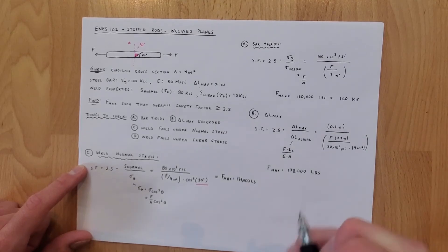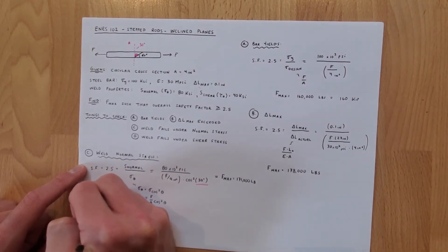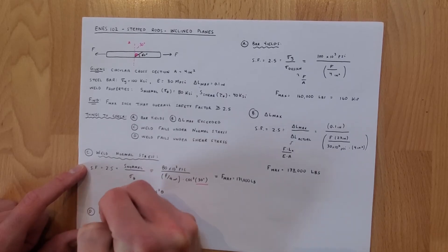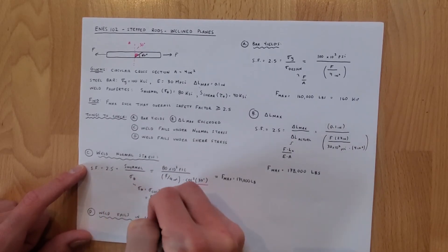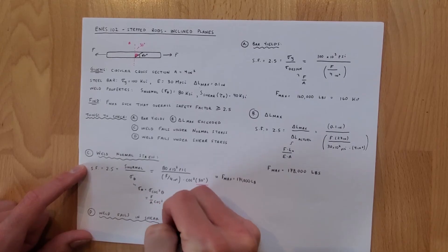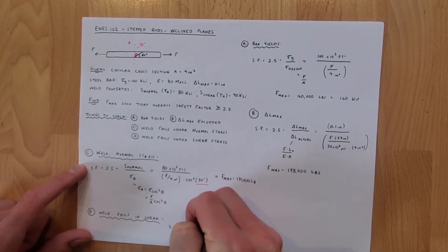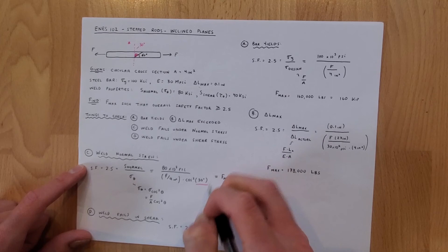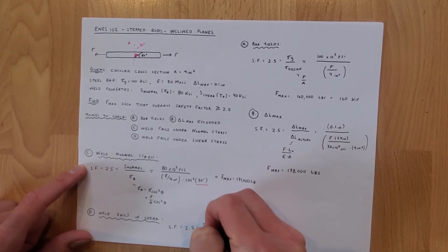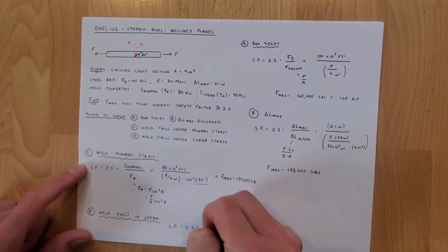So again this is less than this but greater than 160,000 pounds so this is still governing. The last thing we need to check is condition d which is that the weld fails in shear.